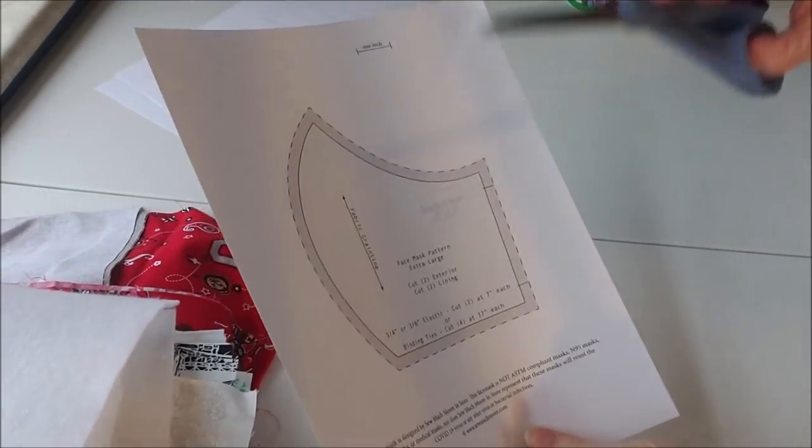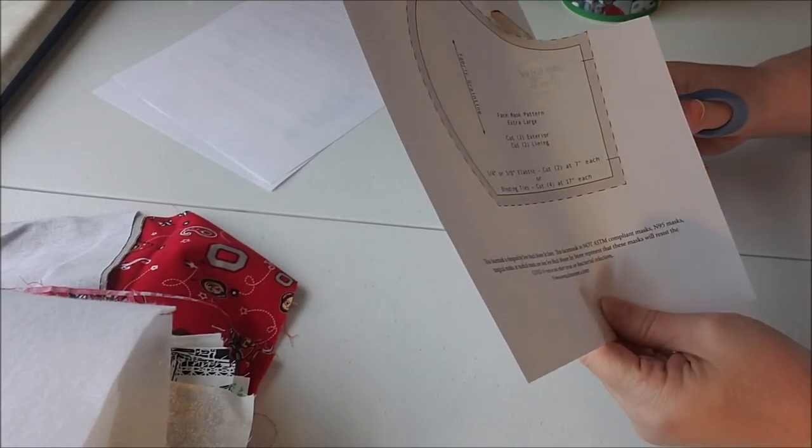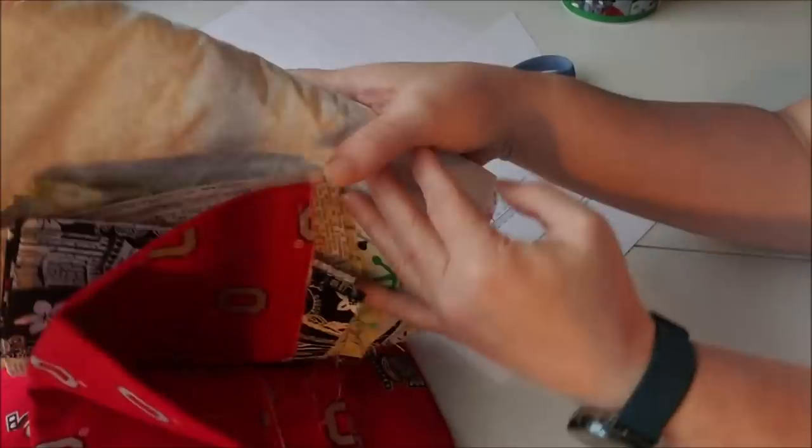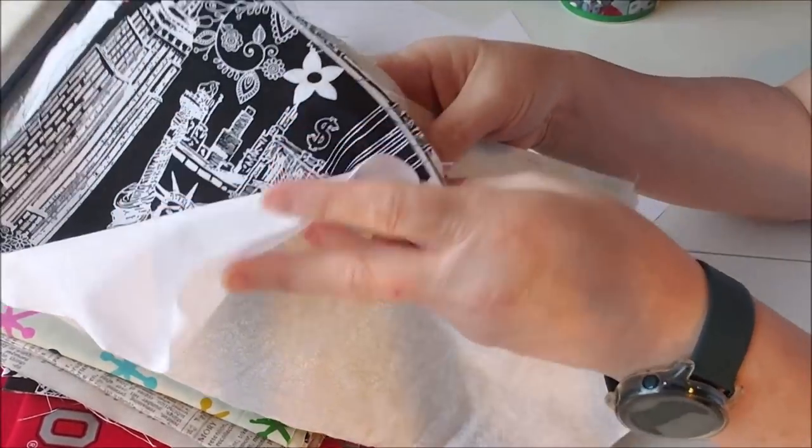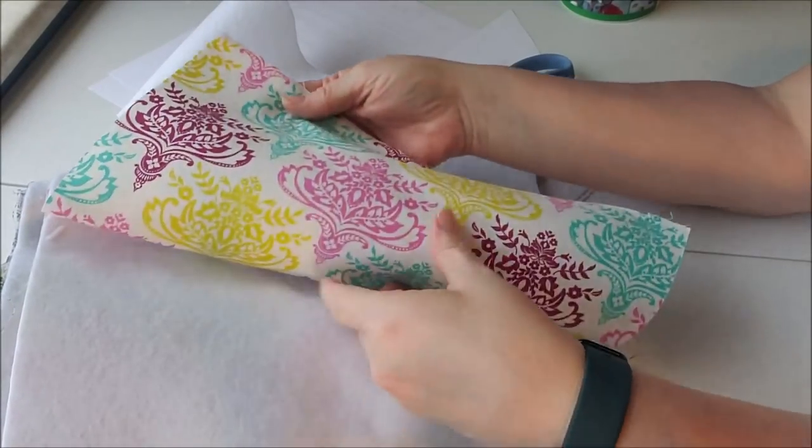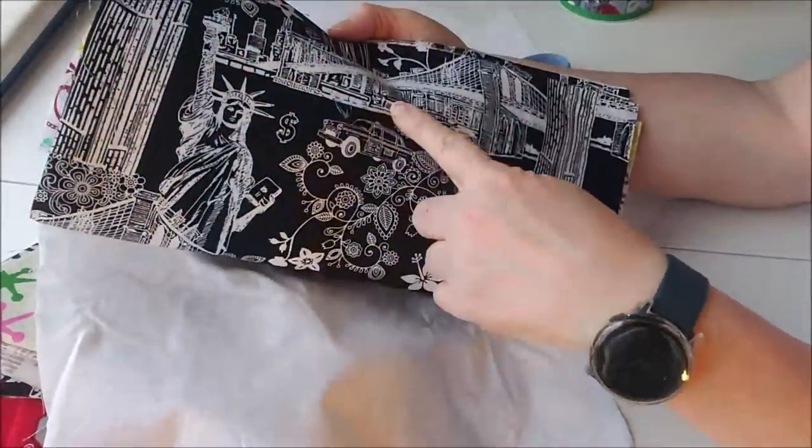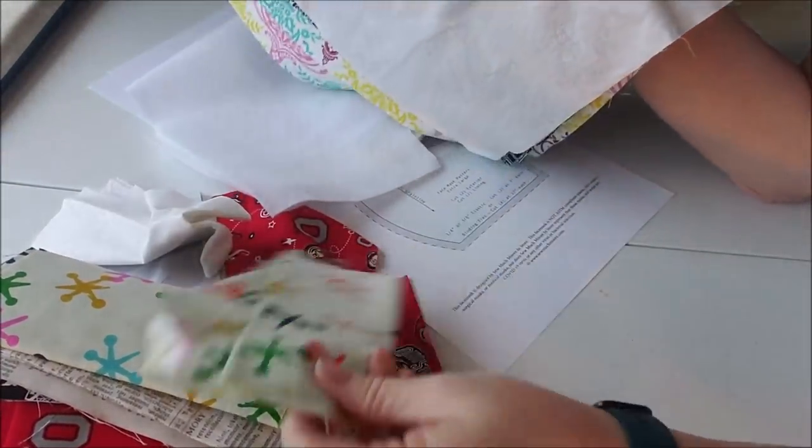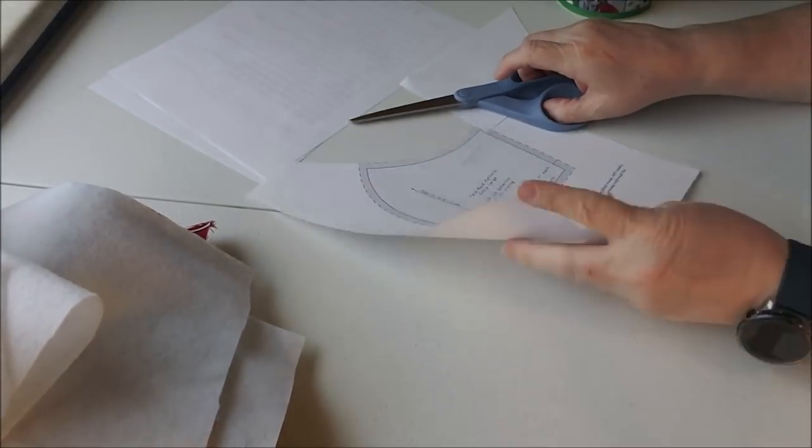If you don't have elastic, if you have ribbon, you can use ribbon. If you have t-shirts, you can cut t-shirts in strips. It will not fray. You just stretch it, and it makes a band. You could cut one to go around your ear. But if I was using t-shirt, I would probably do the ties. But this is your pattern. We're going to take some scissors, non-fabric scissors, if you have them. And we're going to cut this pattern out.